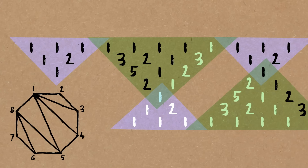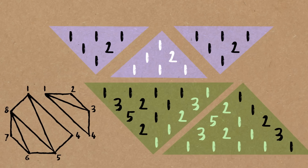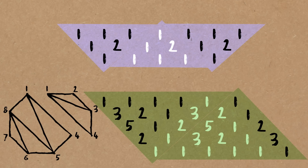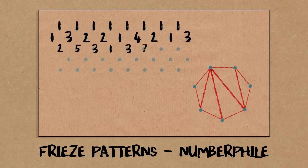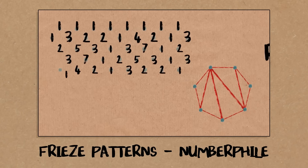Today we're making a video about friezes and triangulated polygons, and in particular how you can cut a frieze and how you can also cut a triangulated polygon — and these correspond to each other. Friezes are just arrays of numbers essentially, and there is already a Numberphile video about friezes. That's a way to construct a frieze pattern consisting of positive integers. I want to quickly recall how they are related to triangulated polygons.